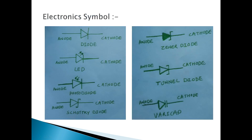Now let's see what is the electronic symbol of the diode. This is our basic diode. The electronic symbol of the diode is this one. One terminal is the cathode and the other is the anode, which is the positive terminal of the diode.